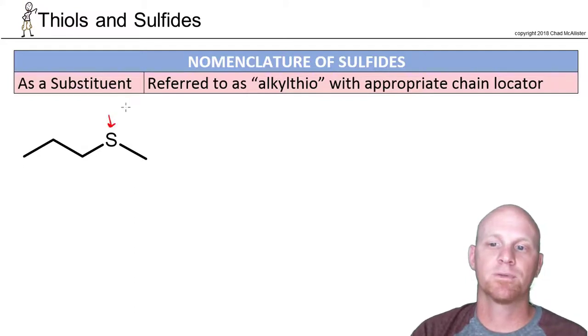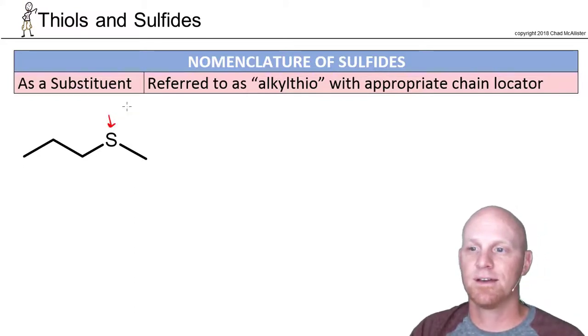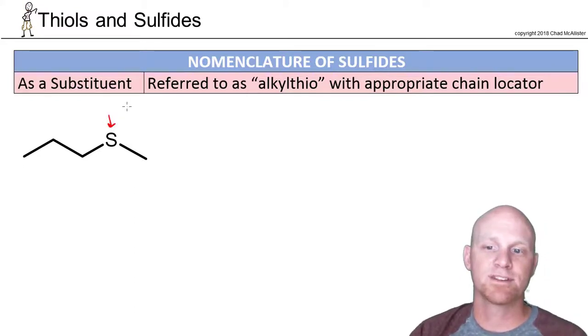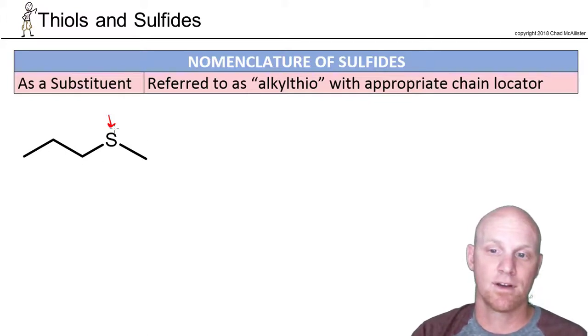You've simply got a sulfur bonded to two carbon chains here. In this case, we'll name them just as a substituent. Whichever side of the sulfur has a longer carbon chain, that's the major chain, and therefore the other side just becomes part of the alkylthio substituent.